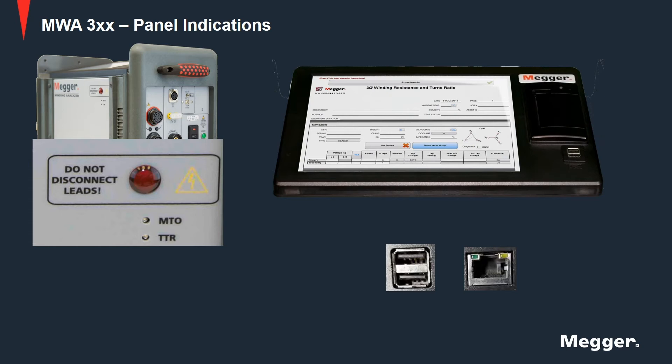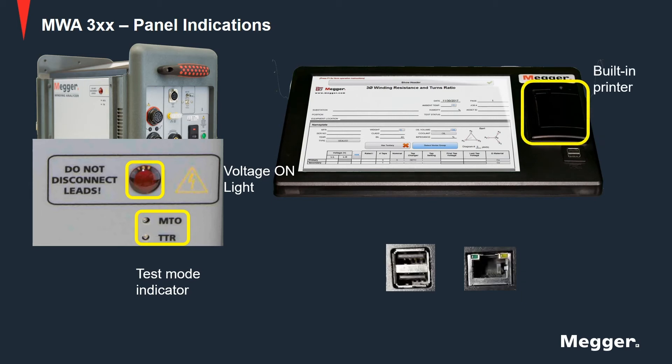At the front of the MWA there are additional panel indications. First is the voltage-on light to indicate AC test voltage or DC test current is being applied to the transformer. Next is the test mode indicator showing which test state the MWA is in, either MTO or TTR. Next is the built-in printer, designed to print individual results and active within the PowerDB form via the print icon. Further, you have USB ports for functions such as external memory, external mouse, or keyboard control.